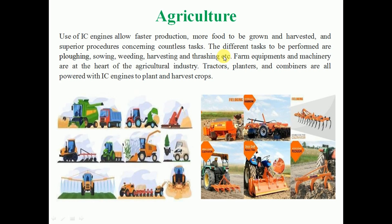Plowing is the initial processing of the land, followed by sowing which is planting, then removal of weeds or unwanted plants, harvesting of the crops, and threshing which is the separation of grains from the crops. Farm equipment and machinery are the heart of the agriculture industry. Examples that are powered with internal combustion engines include tractors, planters, and combiners — which perform many tasks from planting to harvesting.